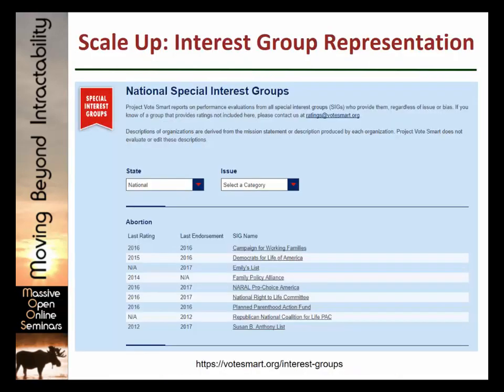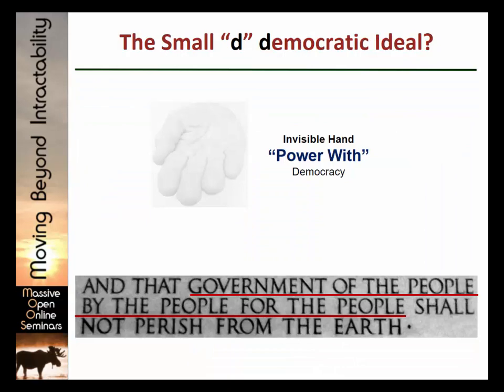And the way you scale this up to huge social things is you use interest groups. This is an interesting catalog of all the different interest groups in the United States. Basically, these are large groups of people who send representatives to these negotiation processes. At any rate, this is what we're talking about when we talk about the democratic ideal — this power-with democracy, government of the people, by the people, and for the people.